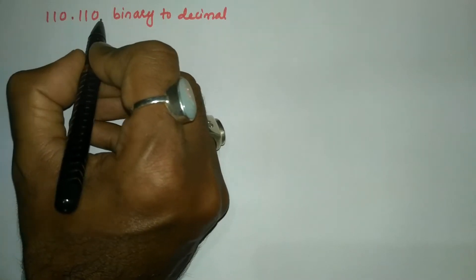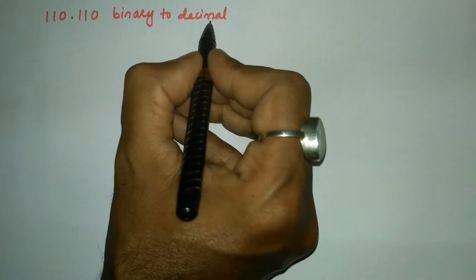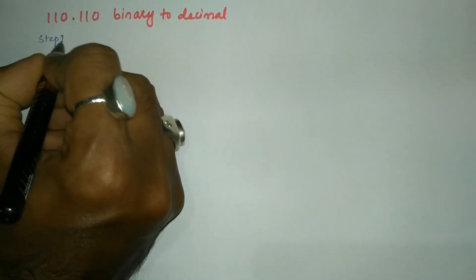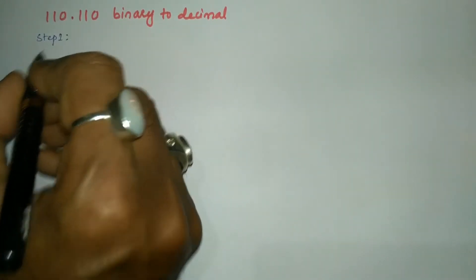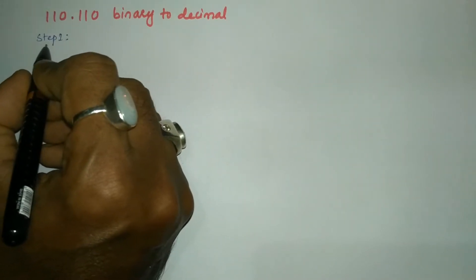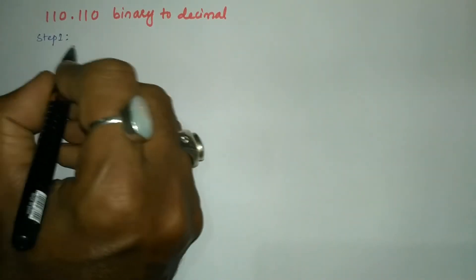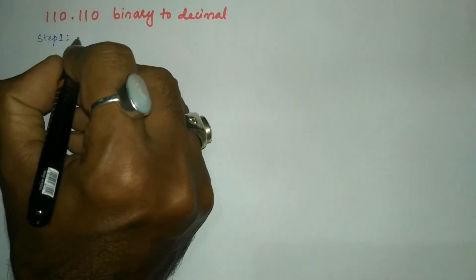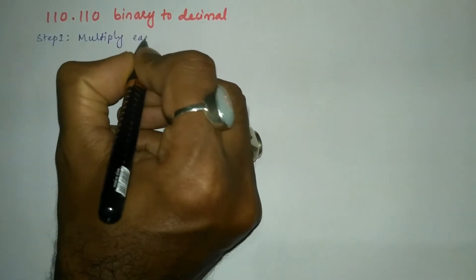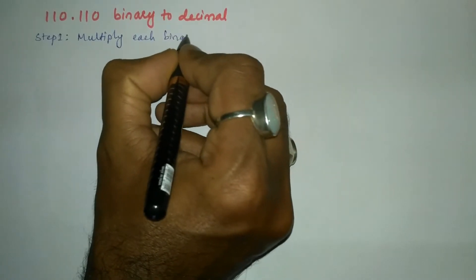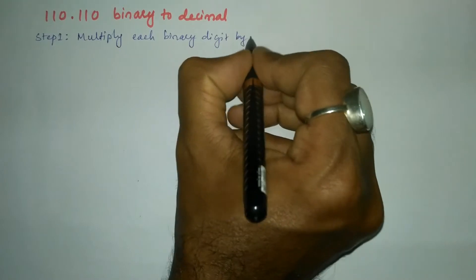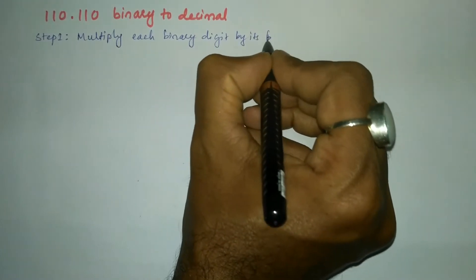Before we convert this number into decimal we have to follow a certain procedure. That procedure is divided into steps. The first step says that we have to multiply each binary digit by its positional weight.